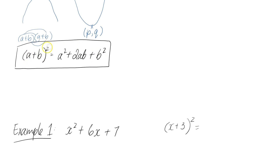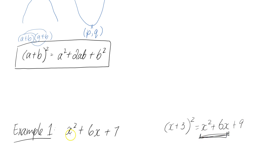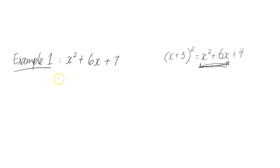Following this rule, when we expand x plus 3 all squared, we end up with x squared — the a squared part — then 2 times x times 3, which is 6x, and then b squared, which is 3 squared = 9. So this front part corresponds to what we have in our equation. I'm going to write it out with the plus 9, and we know this can be rewritten as x plus 3 all squared.